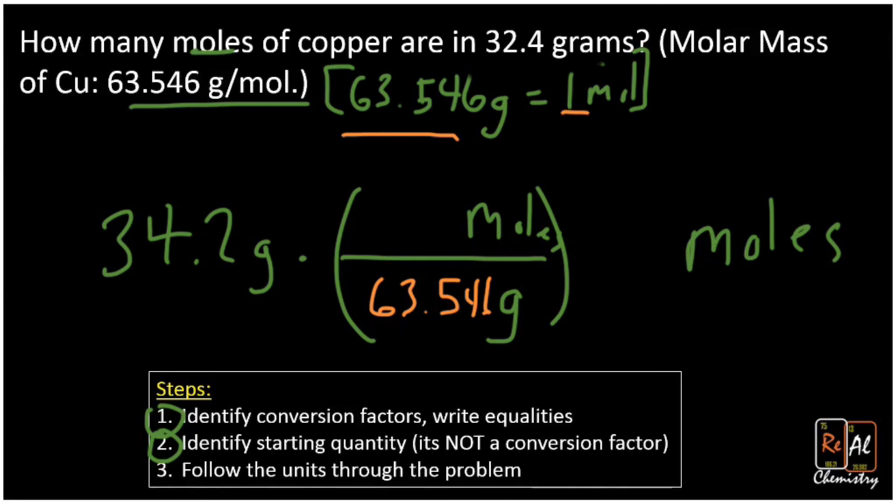And with milliliters, or I'm sorry, with moles should go a one. And so we divide 34.2 by 63.541. And once we've rounded to three sig figs, we'll get 0.538.